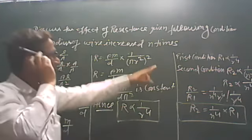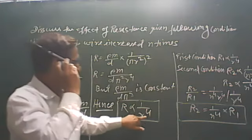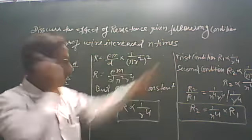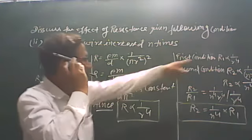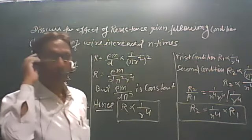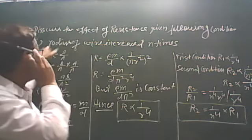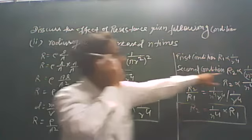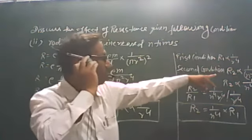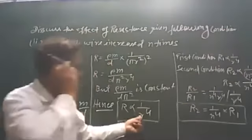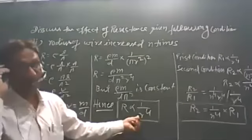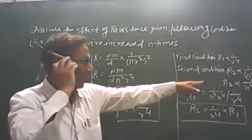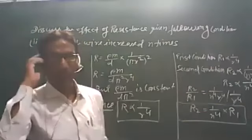This is about the relationship between the radius of the wire and resistance. The first condition: when the radius of the wire increases n times, in these conditions we have supposed the new resistance to be R2. So R2 is directly proportional to 1 upon (nR) to the power 4, because we have increased the radius n times.